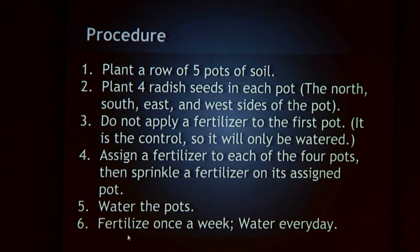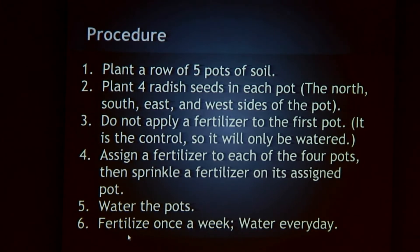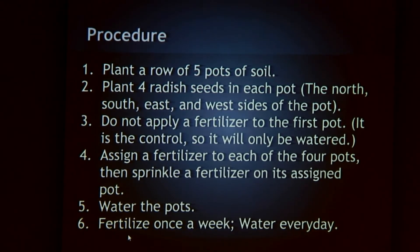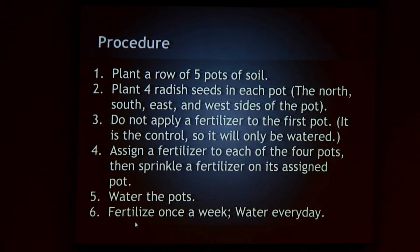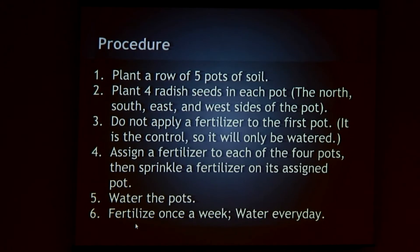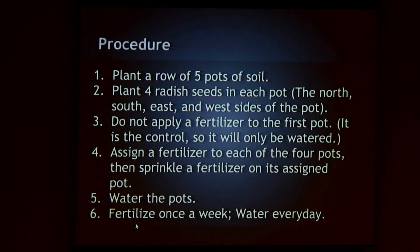My procedure was to plant a row of five pots of soil, plant four radish seeds in each pot at the top, bottom, left, and right of the pots. I didn't apply fertilizer to the first pot because that was my control, so it would only be watered. Then I assigned fertilizers to each of the other four pots, watered them and fertilized once a week, but watered every day. Too much fertilization could damage the growth of the plant.